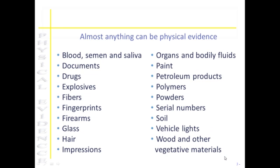Almost anything can become physical evidence. Topics we will discuss in this course include different body fluids such as blood, semen, or saliva; documents; different drugs whether powders, pills, or plant material; explosives; and many types of trace evidence including fibers, glass, hair, paint, soil, firearms, impressions, petroleum products, and polymers.